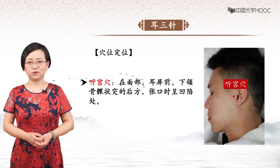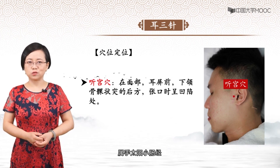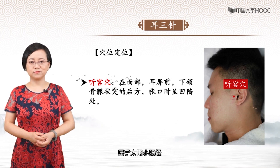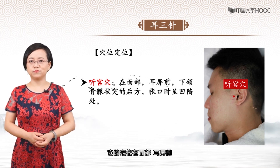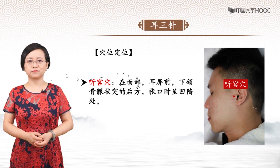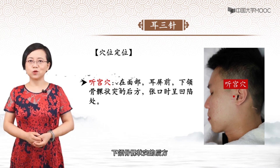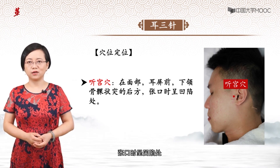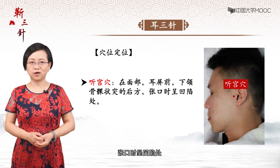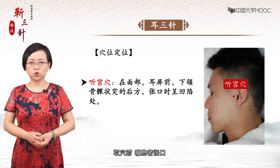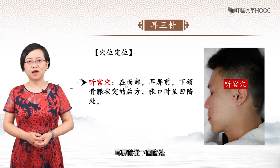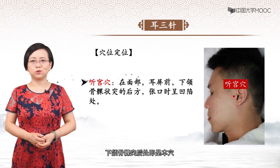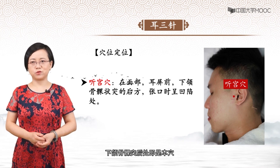第一个穴位是听宫穴，属手太阳小肠经。它的定位在面部耳屏前，下颌骨髁状突的后方，张口时呈凹陷处。取穴时主患者张口，耳屏前微下凹陷处，下颌骨髁状突处即是本穴。